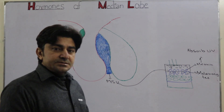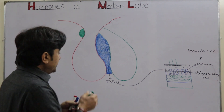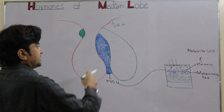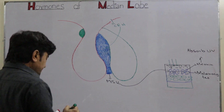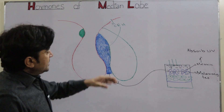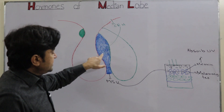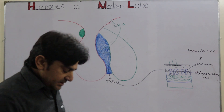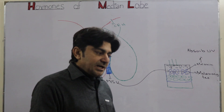Now, what stimulates the release of MSH? There are mainly three hormones which regulate its synthesis and release. The first is CRH — corticotropin releasing hormone — from the hypothalamus. CRH acts on the cells of the intermediate lobe and stimulates them to produce MSH. The hypothalamus releases CRH when a person is exposed to light; the hypothalamus receives signals about light intensity.